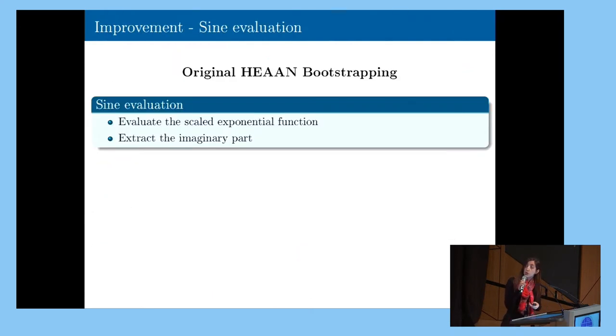So how does it work the sign evaluation in the original paper? So what they do is they perform it in two steps. They start by evaluating the scaled exponential function. And then they retrieve the sign function by just extracting the imaginary part.